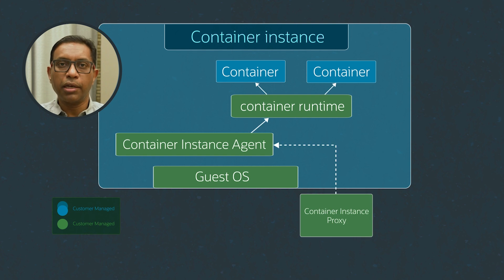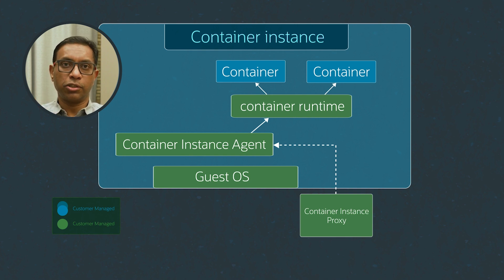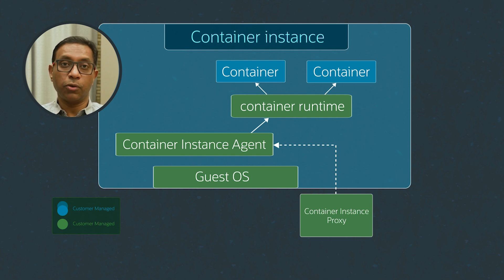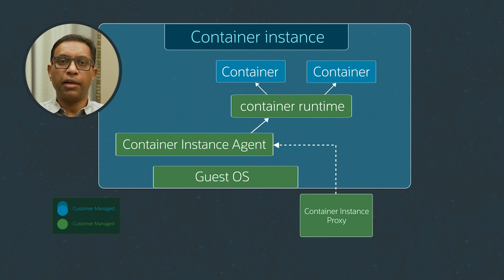A few months back, we launched a service called Container Instances, which is essentially a native OCI instance that is pretty much a container — actually a few containers as part of a container pod — that is fully managed by OCI. Today we're going to talk about how we bridge OKE, which is Oracle Kubernetes Engine, with the underlying construct called Container Instances, so that customers who use Kubernetes on OCI don't have to worry about management of anything, including their underlying instance fleet.